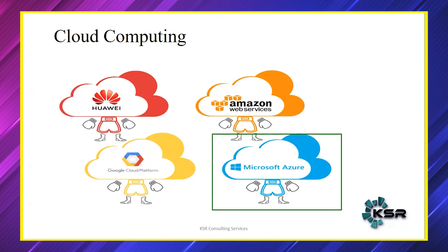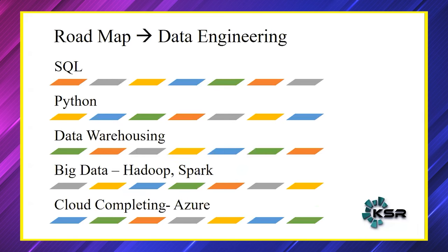The technologies you need to know are SQL, Python, data warehousing concepts, big data with Hadoop, Spark, and PySpark, with the majority of the portion in Azure. You can use AWS, Azure, or GCP for building pipelines — the topics are the same until the last part. Just like choosing between Pizza Hut and Domino's based on taste, pricing, and distance, we choose Azure because Microsoft Azure is one of the best cloud services specifically for data engineering.